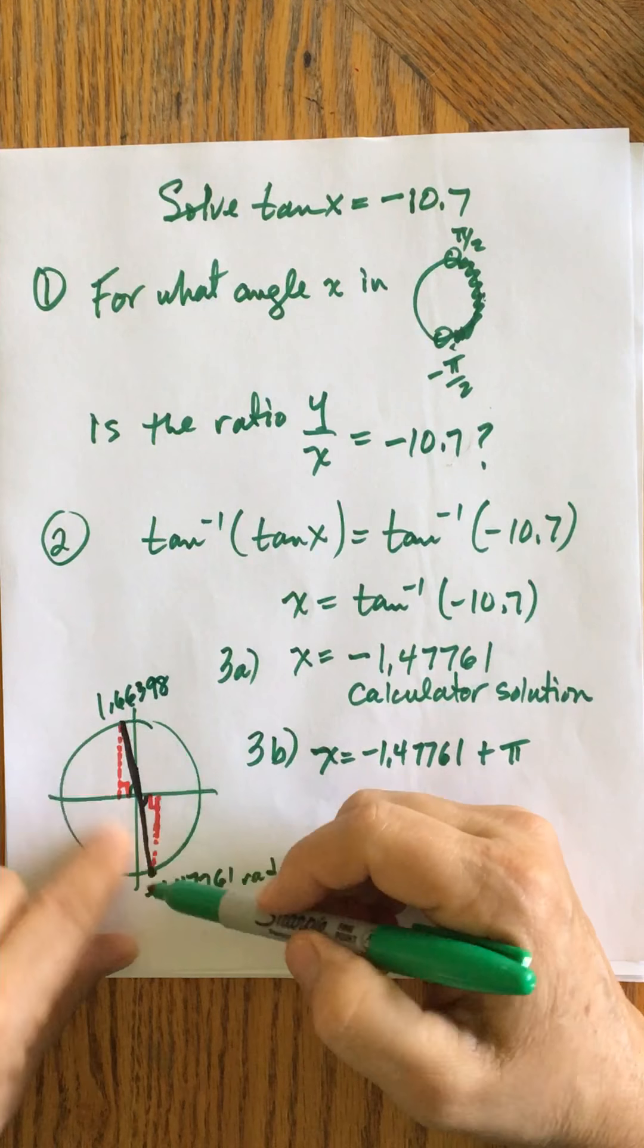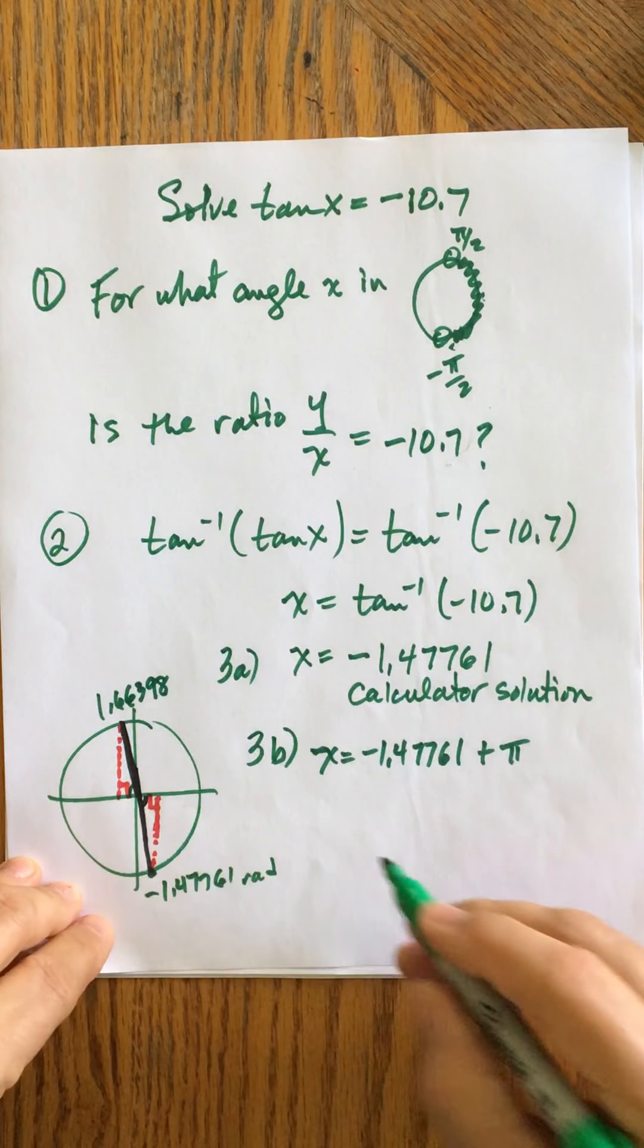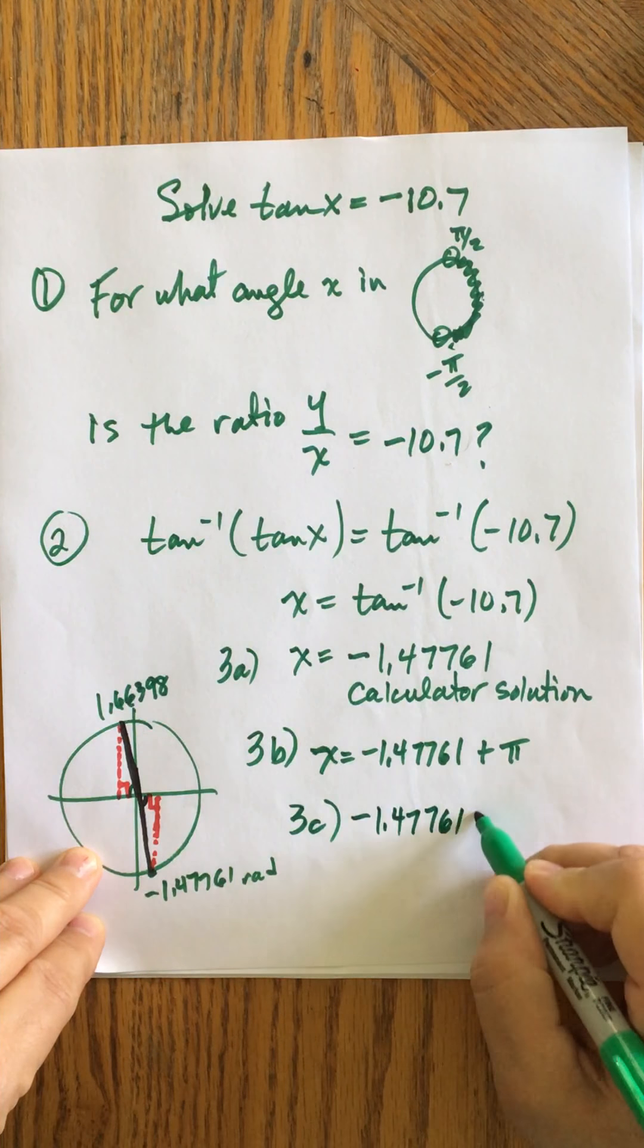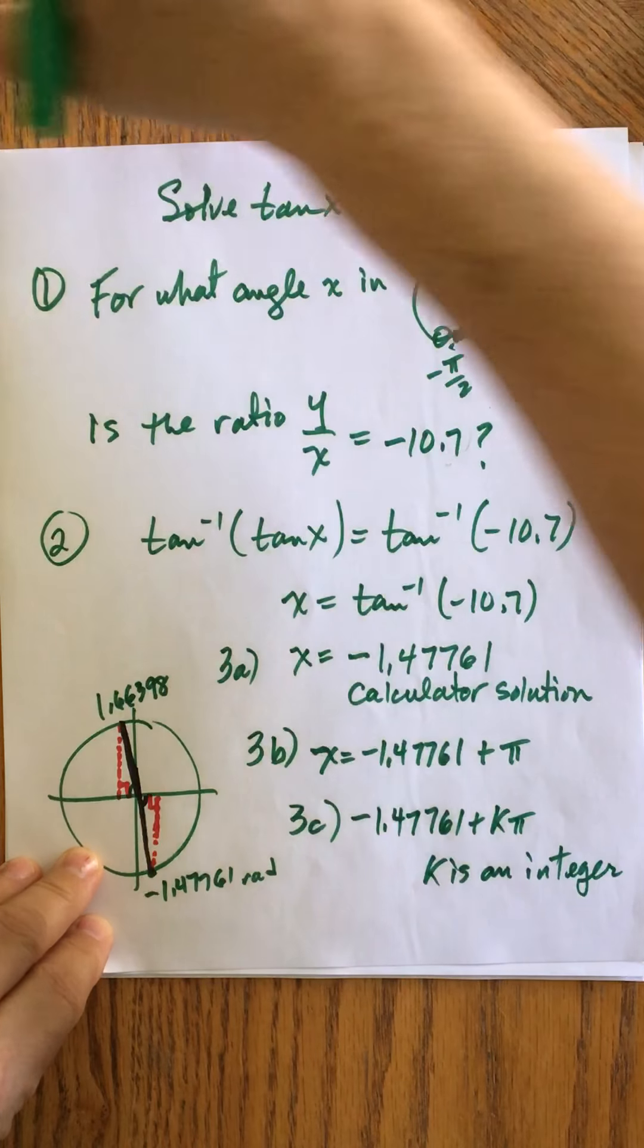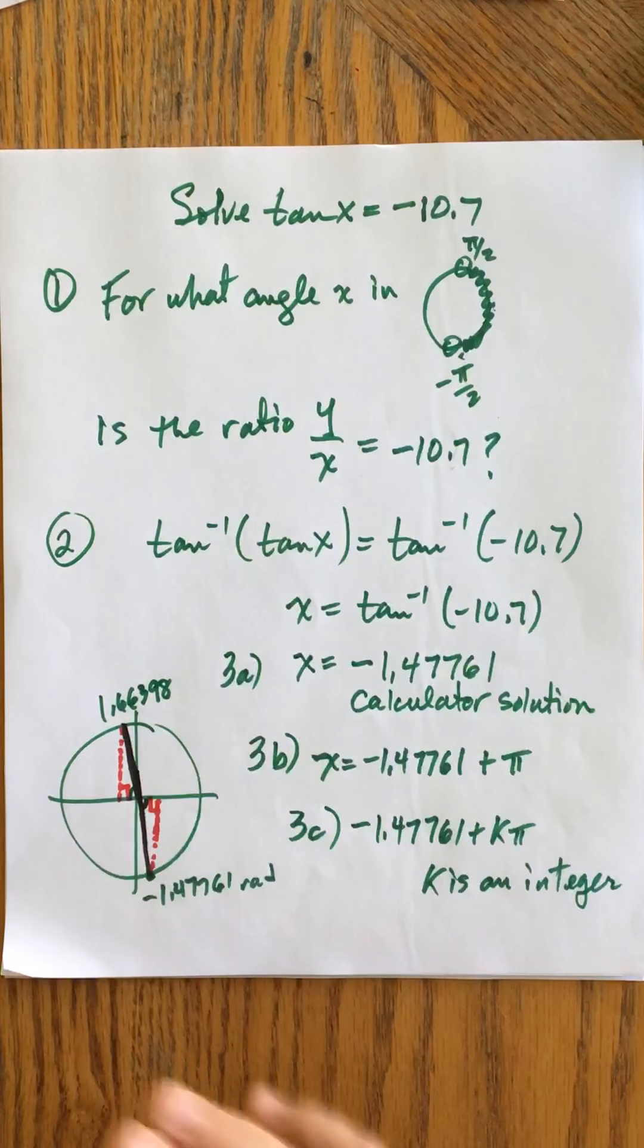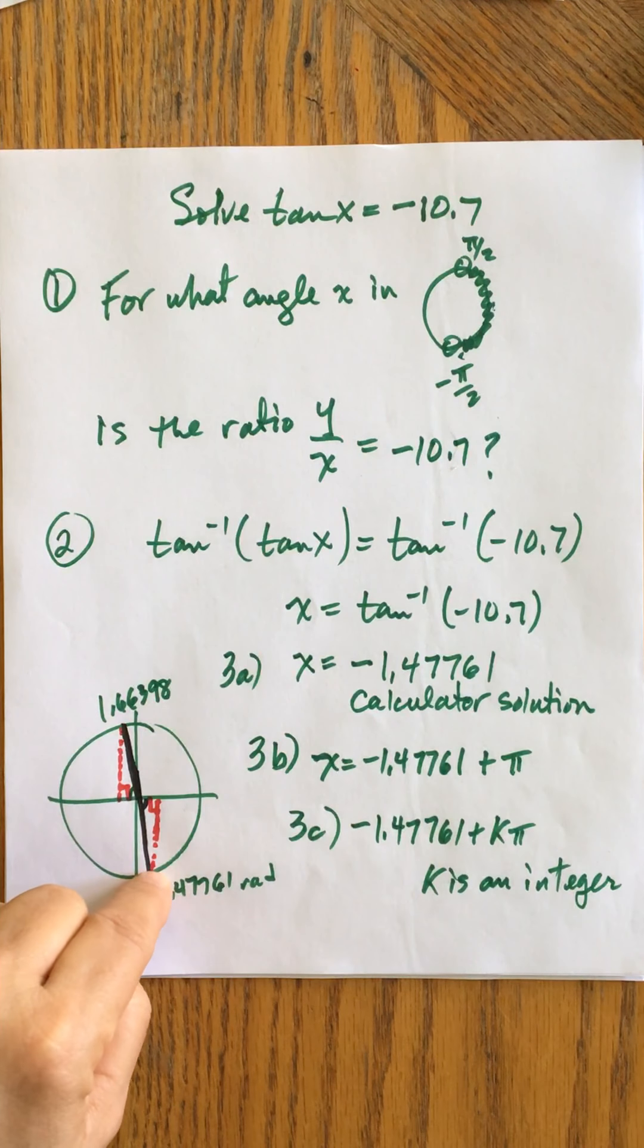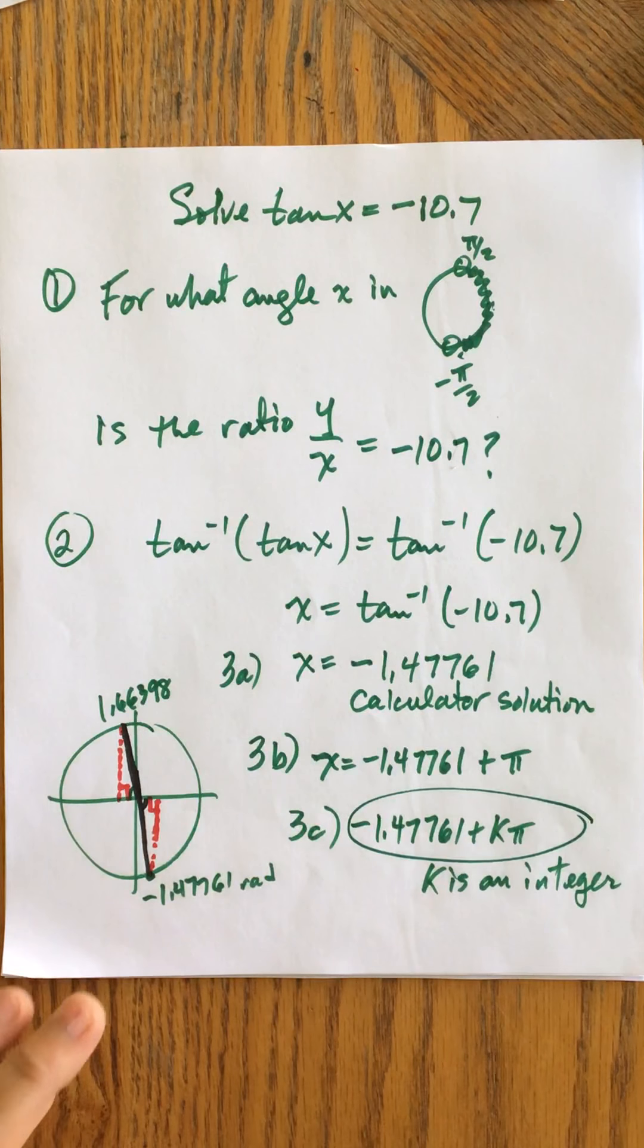But normally, if these were not equidistant apart, I'd have to say 1.66398 plus 2k pi, and then negative 1.47761 plus 2k pi. But because they are equidistant, I can really just say that this is going to be negative 1.47761 plus k pi, where k is an integer. And again, I'm using this. Tangent is whatever theta you get from the calculator, plus pi. It's just pi. And that should cover it. So you don't really have to put this plus 2k pi in this plus 2k pi. It wouldn't be wrong. It would just be redundant. So I've got a much longer video on tangent x equals 2.35, where I show you that. I actually put in values so you can prove it to yourself. So this would be your solution. Thanks so much for listening.